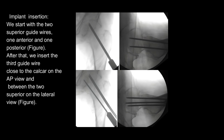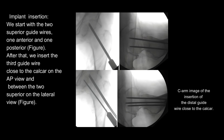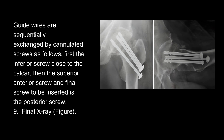Implant Insertion: We start with the two superior guide wires, one anterior and one posterior. After that, we insert the third guide wire close to the calcar on the AP view, and between the two superior wires on the lateral view. C-arm images confirm insertion of the two superior guide wires and the distal guide wire close to the calcar. Guide wires are sequentially exchanged by cannulated screws: first the inferior screw close to the calcar, then the superior anterior screw, and finally the posterior screw.